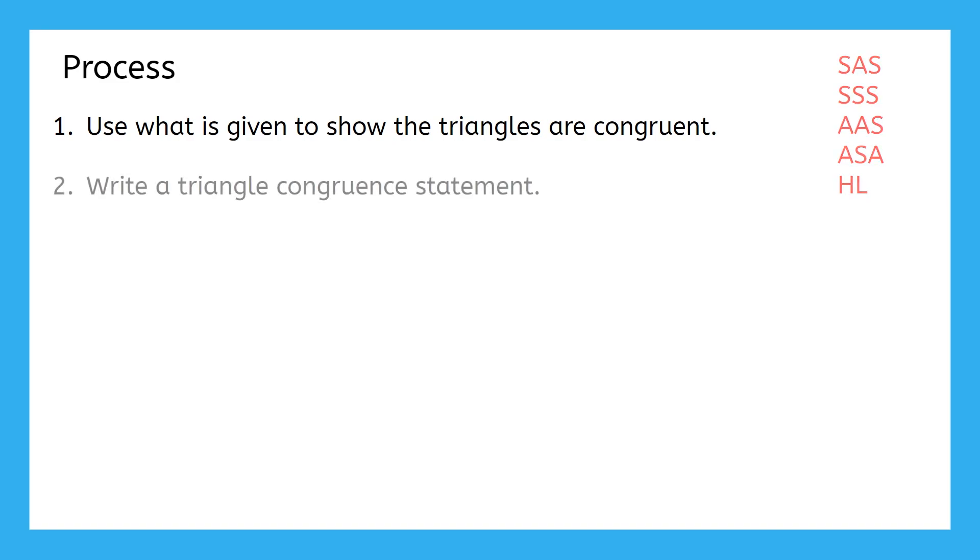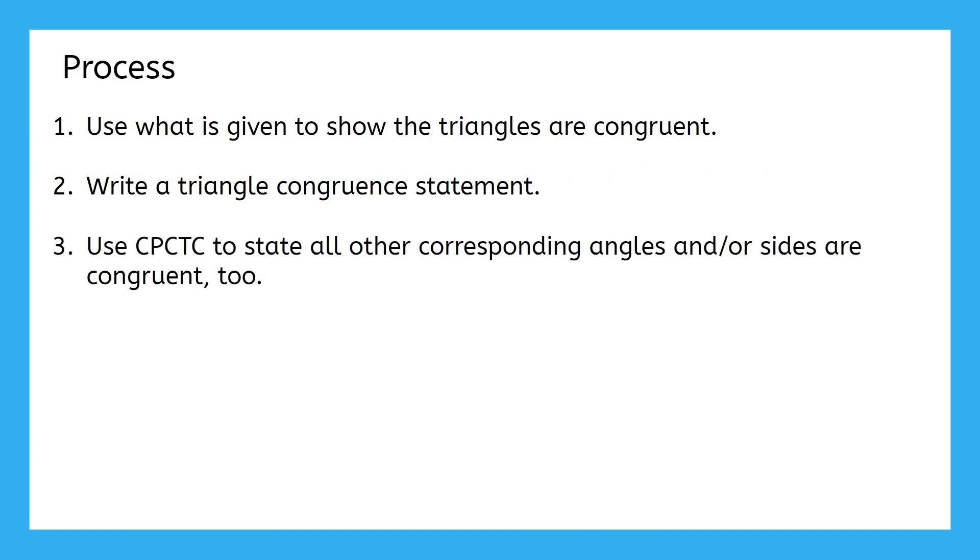Step two is to write a congruence statement, like this. You learned this in the previous lesson too. Now all that's left is step three. We can use CPCTC to state that all other corresponding angles or sides are congruent as well. There will always be a total of six congruences within the two triangles, three side congruences, and three angle congruences.